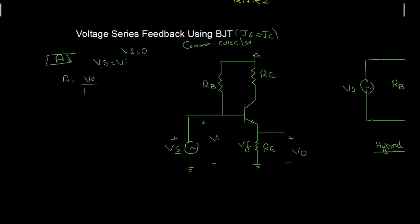The gain will be equal to V0/Vi. V0 equals the emitter current multiplied by Re, divided by Vi (which equals Vs since Vi = Vs). In BJT, IE ≈ IC, so this is equal to IC times Re divided by Vs.